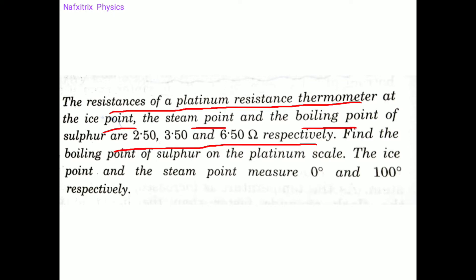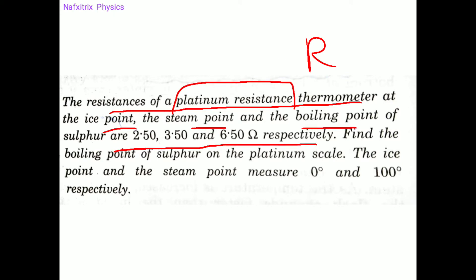Here we are measuring temperature on the platinum resistance thermometer based on the property of resistance offered by a platinum wire. For different resistances, different temperatures are recorded. Temperature is measured based on the resistance shown by this particular thermometer — that decides what is the temperature of the body.